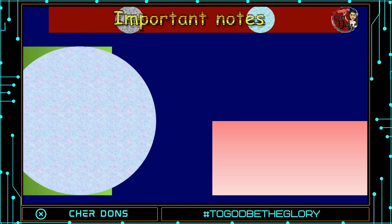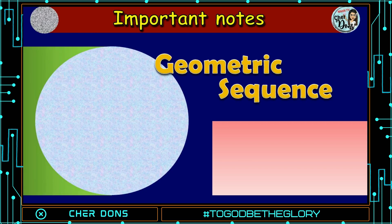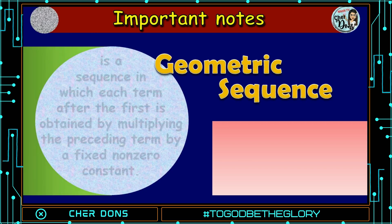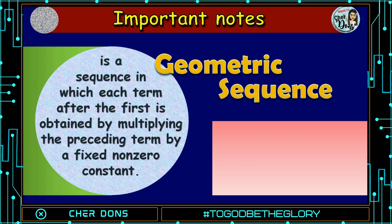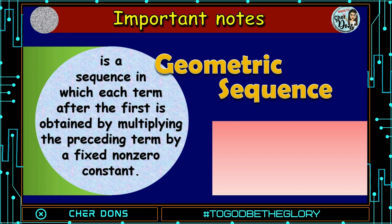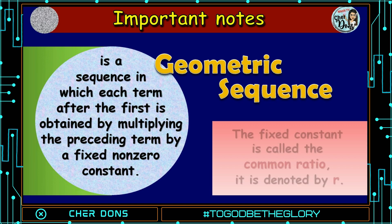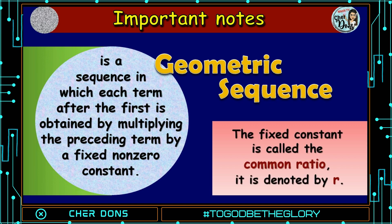Important notes. A geometric sequence is a sequence in which each term after the first is obtained by multiplying the preceding term by a fixed non-zero constant. The fixed constant is called the common ratio, and it is denoted by the small letter r.